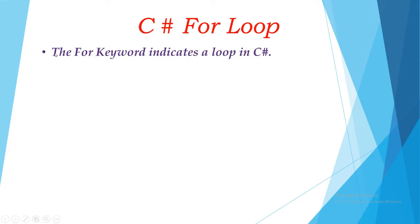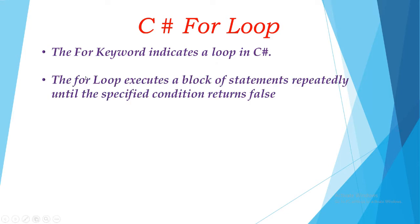The first thing is the 'for' keyword — we have to use the 'for' keyword which indicates a loop in C#. The for loop executes a block of statements repeatedly until the specified condition returns false. It will keep executing again and again until the condition becomes false.